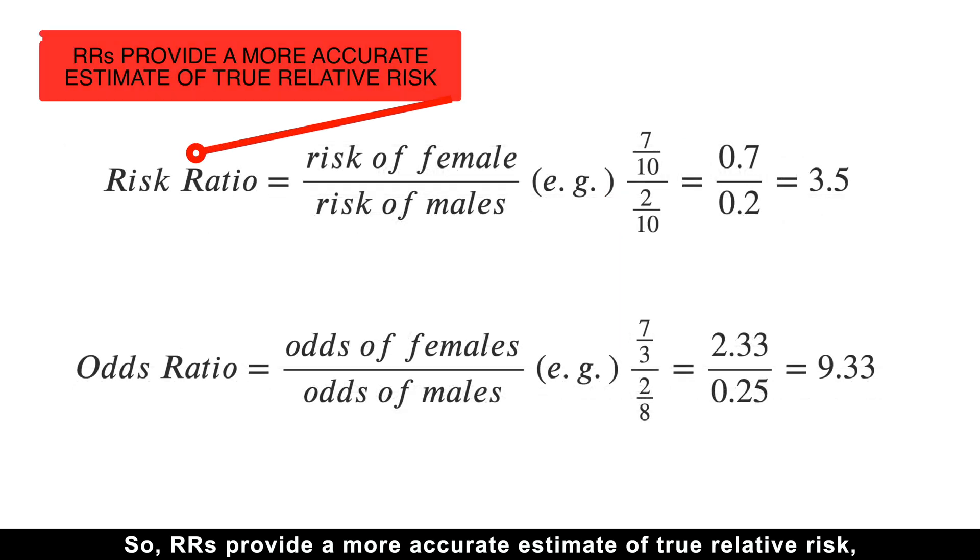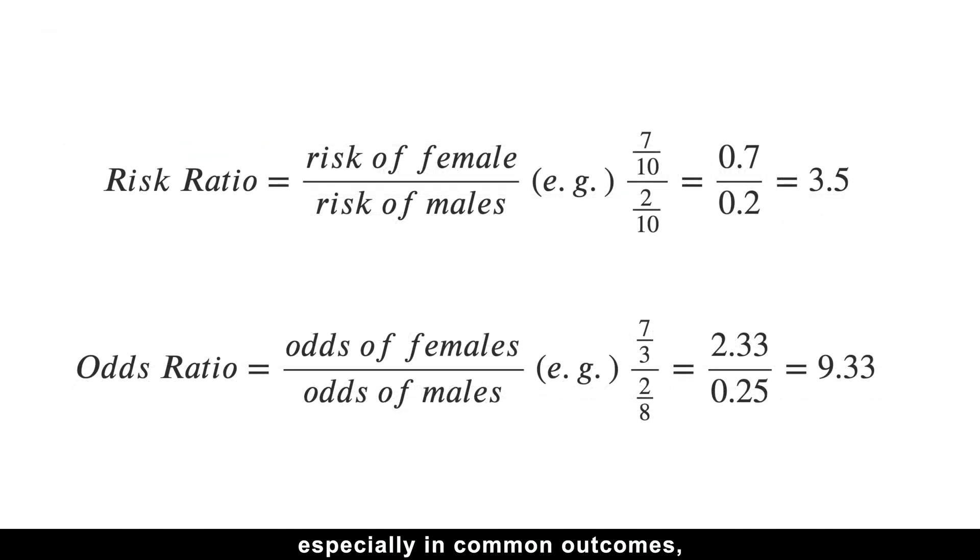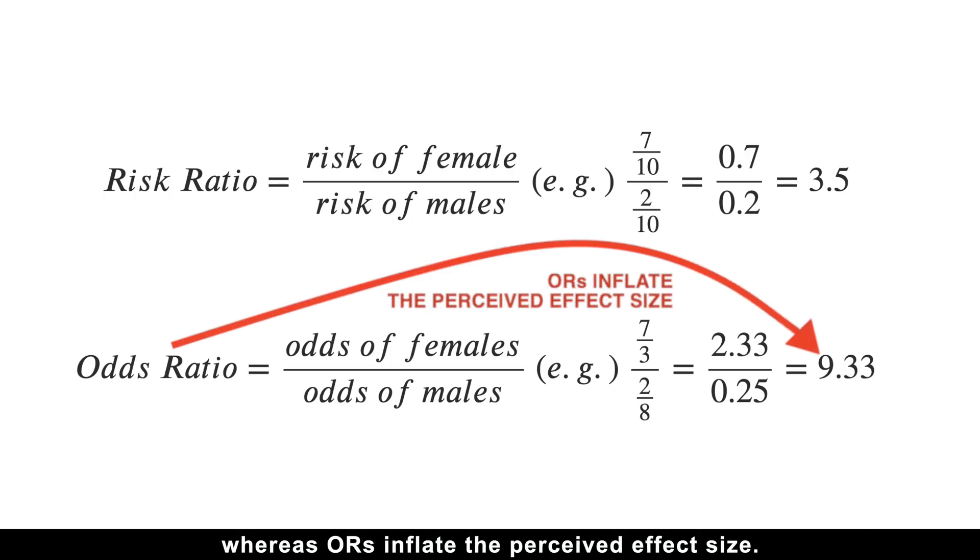So risk ratios provide a more accurate estimate of true relative risk, especially in common outcomes, whereas odds ratios inflate the perceived effect size.